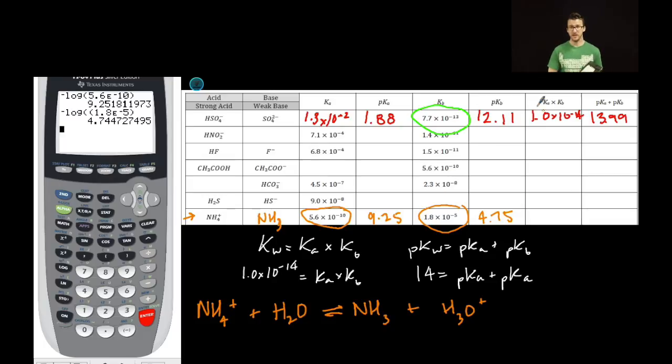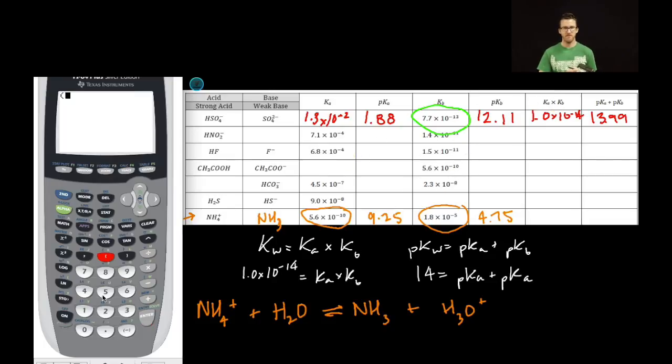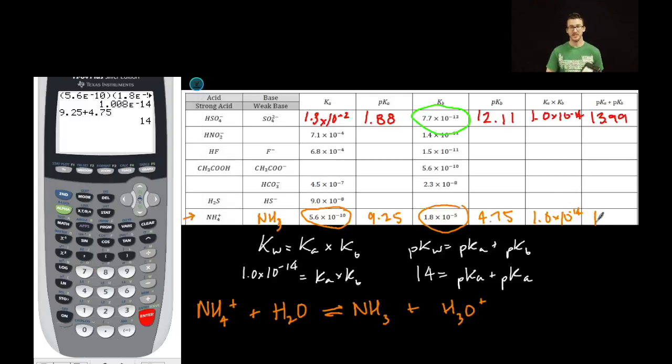Again, let's figure out what the product of my Ka and Kb values will be. What do you know? We get 1.0 times 10 to the negative 14. If I add my pKa, 9.25, to my pKb, 4.75, I get 14.